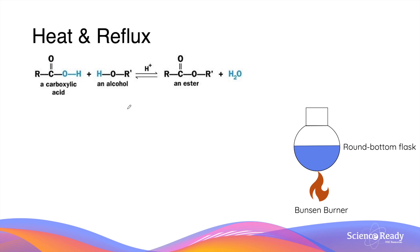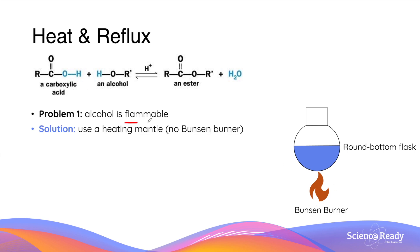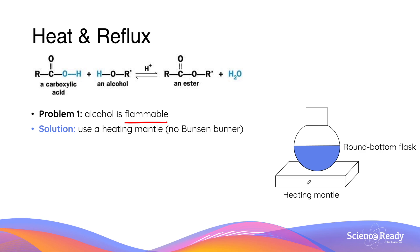When performing an esterification reaction, it is crucial to keep in mind that heat should not be supplied by a Bunsen burner. The naked flame in the presence of alcohol, which is a flammable substance, poses a huge fire hazard. Therefore, the Bunsen burner is always replaced with a heating mantle to reduce this risk.